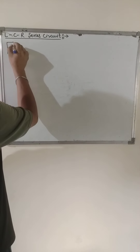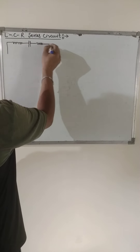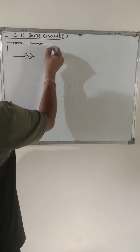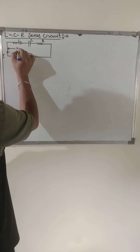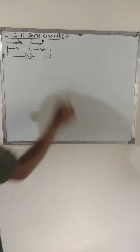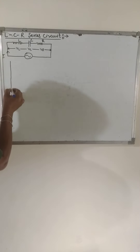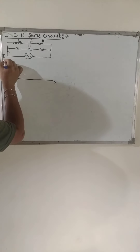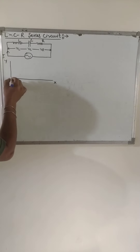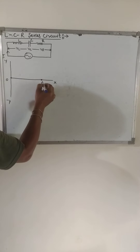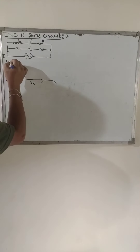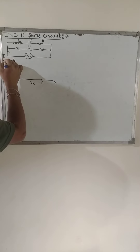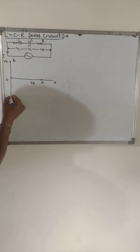In the LCR series circuit, we have inductor L, capacitor C, and resistance R connected in series with an AC source. Current I flows through the circuit with potential differences V_L, V_C, and V_R across each component. For the phasor diagram: the x-axis is drawn, positive y-axis upward, negative y-axis downward, with origin O. Point A is marked — OA represents potential difference V_R along the x-axis. Point B above represents V_L on positive y-axis, and point C below represents V_C on negative y-axis.